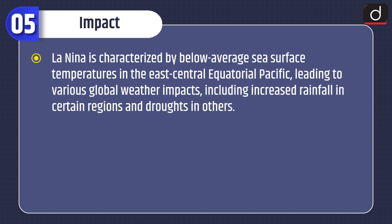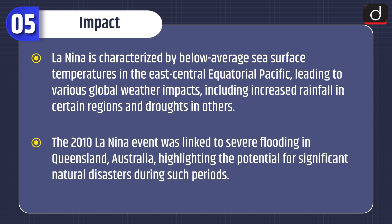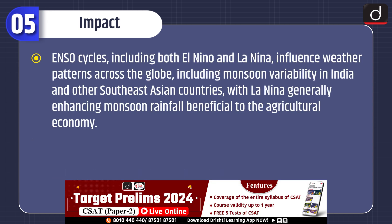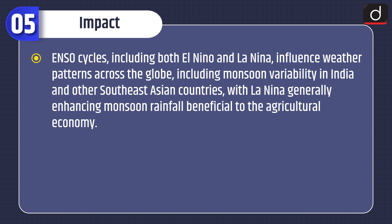La Niña is characterized by below-average sea surface temperatures in the east-central equatorial Pacific, leading to various global weather impacts, including increased rainfall in certain regions and droughts in others. The 2010 La Niña event was linked to severe flooding in Queensland, Australia, highlighting the potential for significant natural disasters during such periods. ENSO cycles, including both El Niño and La Niña, influence weather patterns across the globe, including monsoon variability in India and other Southeast Asian countries, with La Niña generally enhancing monsoon rainfall beneficial to the agricultural economy.